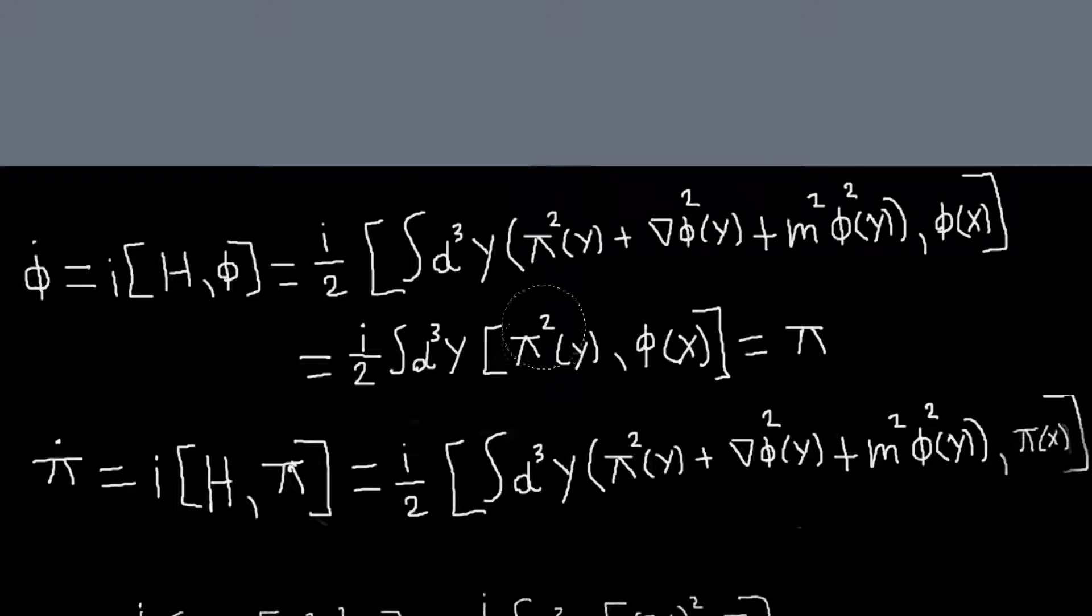I'll just be left with this commutator of pi squared and phi. You can just expand this out, and you'll get a delta function. This kind of works out just like in ordinary quantum mechanics. It goes as like the derivative of its function times the commutator of just pi and phi.